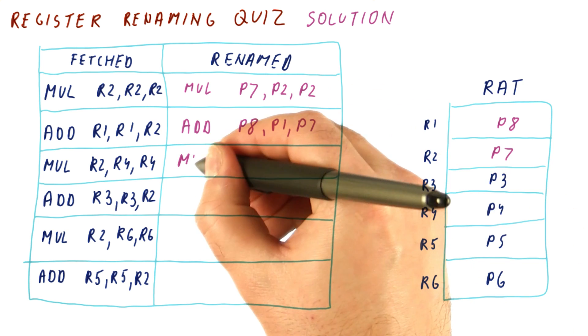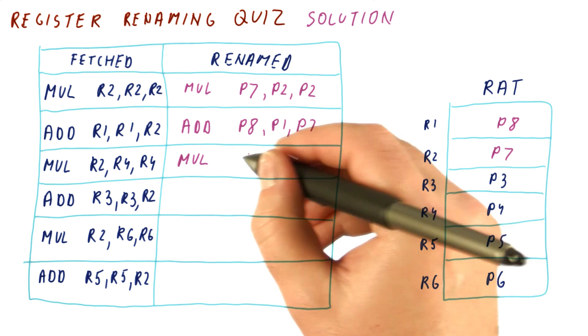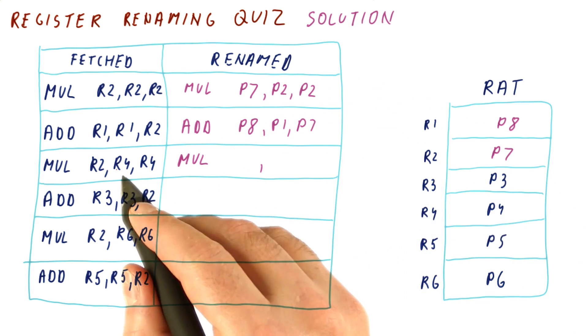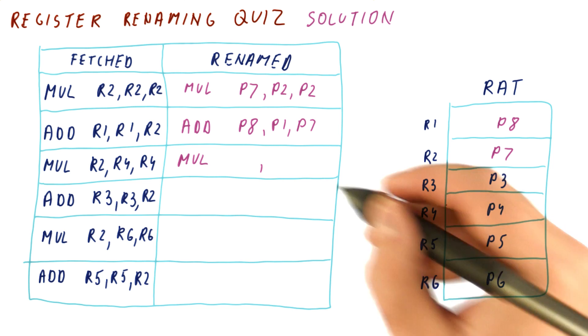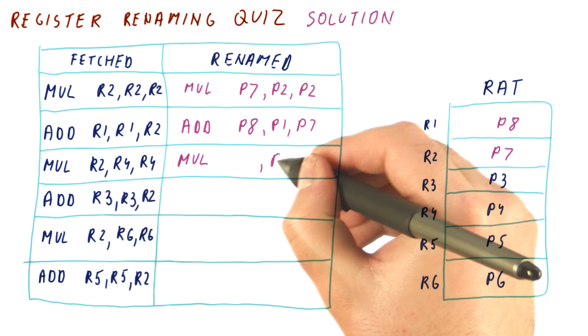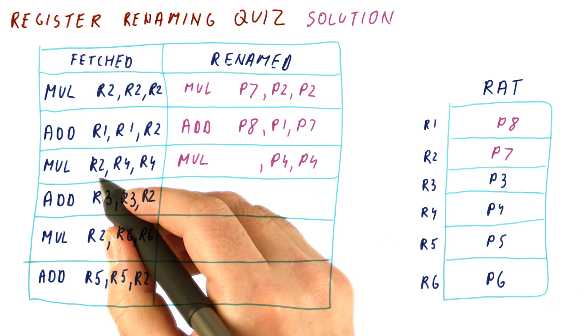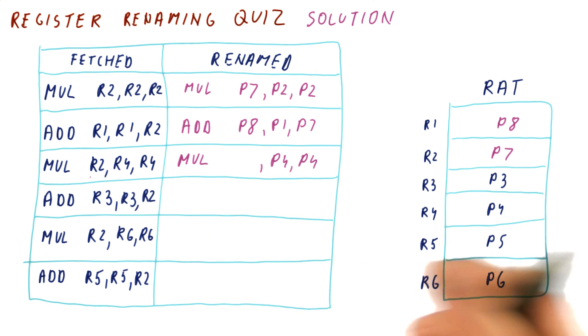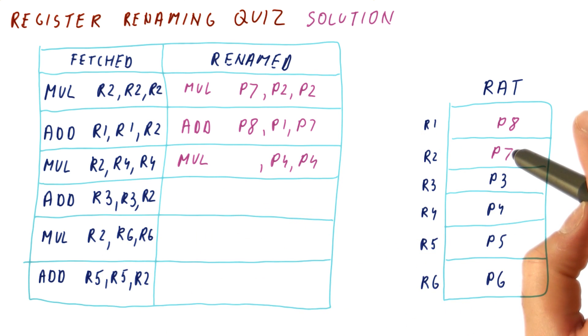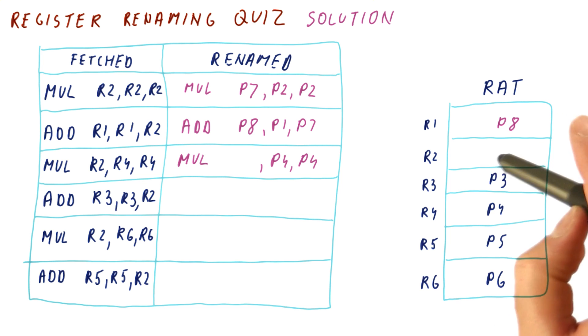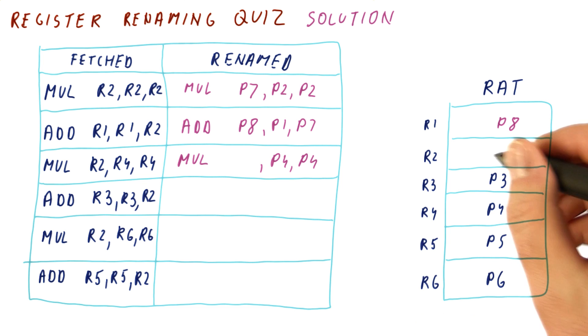Then we have the multiplication of R4 and R4 — this is P4, P4. We write the new value of R2, and that means that P7 now becomes P9.